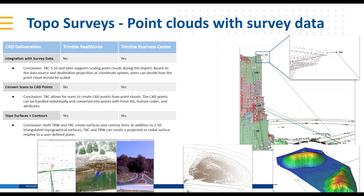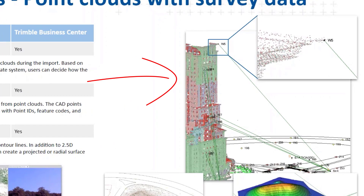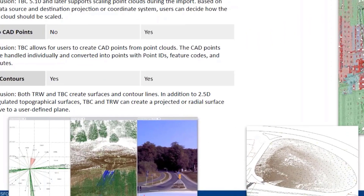TBC and RealWorks can create a projected or radial surface relative to a user-defined plane, so you can go vertical — or, as we showed earlier with the tank inspection, you can unfold that tank using a cylindrical plane. As a surveyor, what I also like about using TBC for topo surveys is that I can easily have multi-sensor data all in one place in a real-world projection, seeing all my topo and optical observations together with my point cloud as well as geo-referenced panorama images.